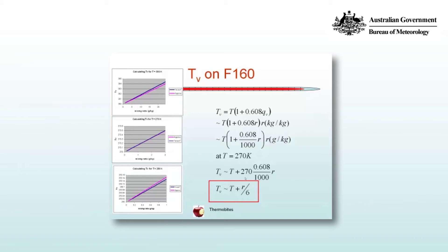Then we ask the question, what's the virtual temperature at 270 degrees Kelvin? And so it's a little bit of sleight of hand here, but then we write the virtual temperature is approximately equal to T plus 270 by 0.608 over a thousand by R, which we can approximate nicely as Tv is approximately equal to T plus R on 6, where R is in grams per kilogram.